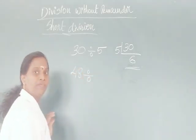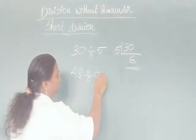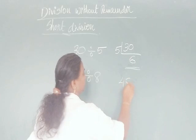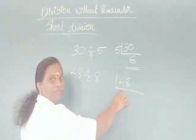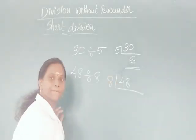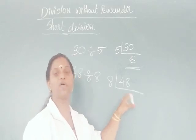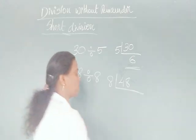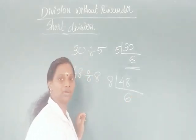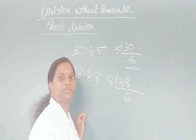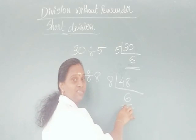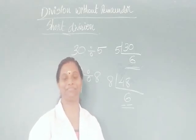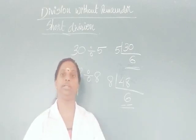What about the next question? Here we have 48 divided by 8. Draw the division bracket, write 48 inside and 8 outside. How many 8s are 48? Yes, 6 eights are 48. So here, 6 is called the quotient, 48 is called the dividend, and 8 is called the divisor. This method is called the short division method — short division without remainder.